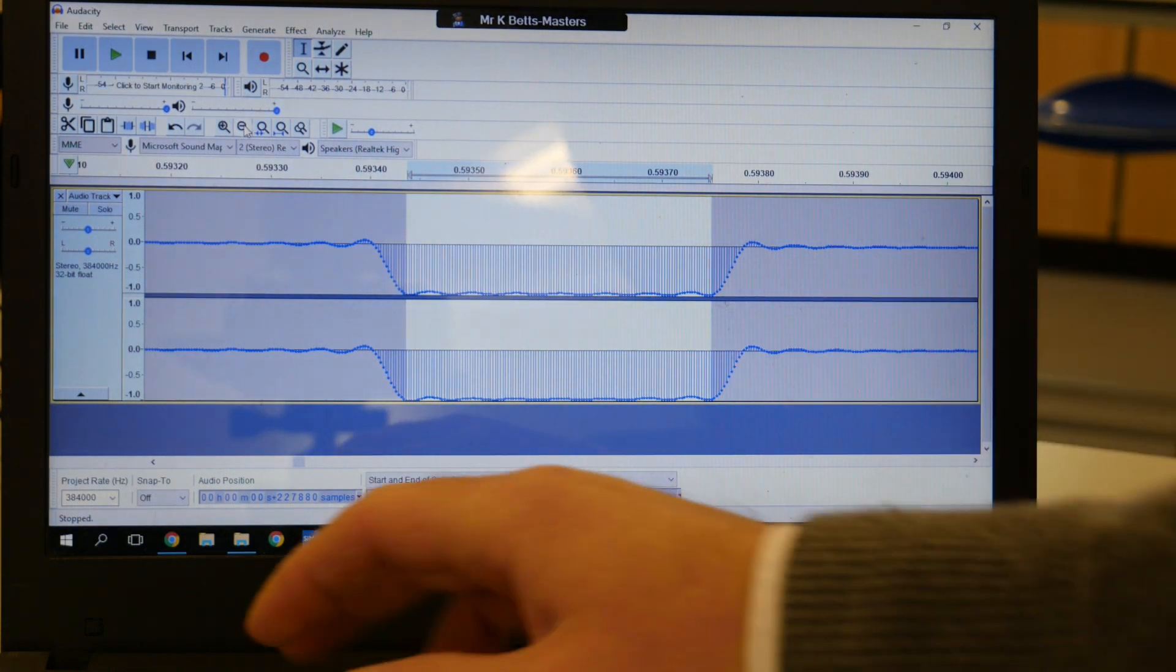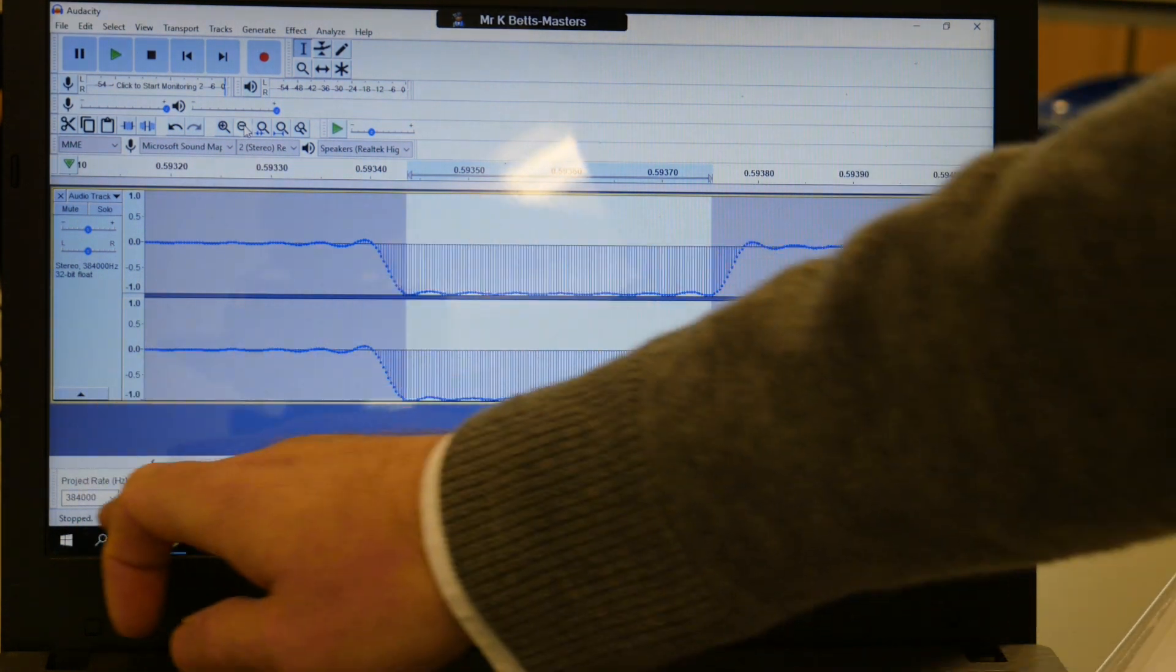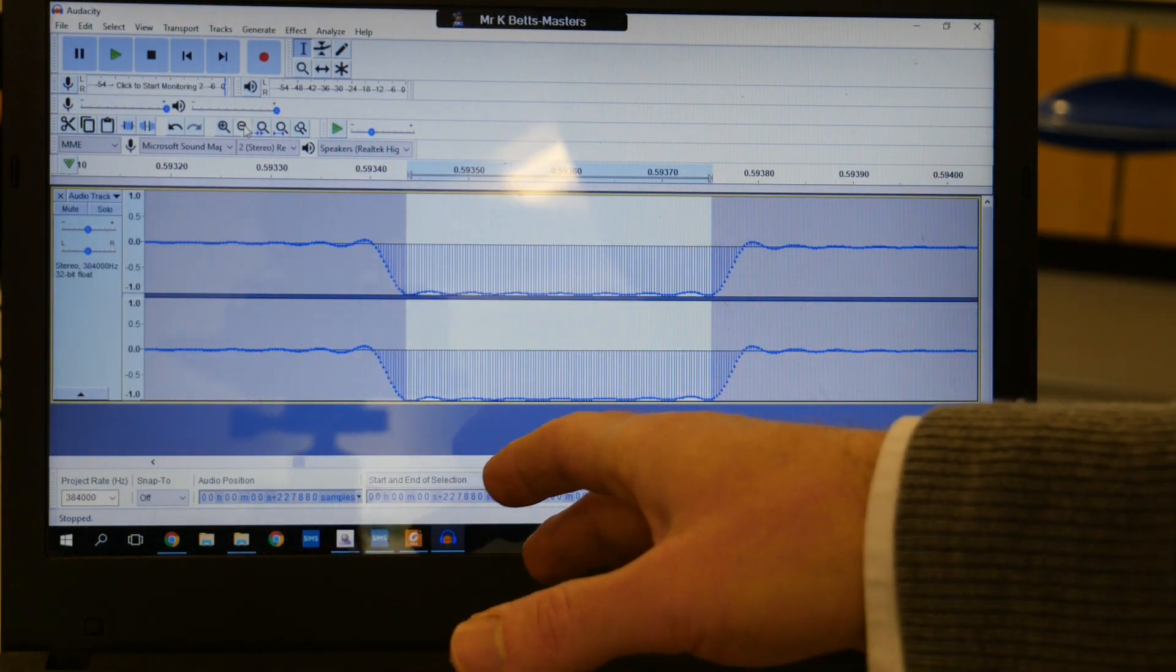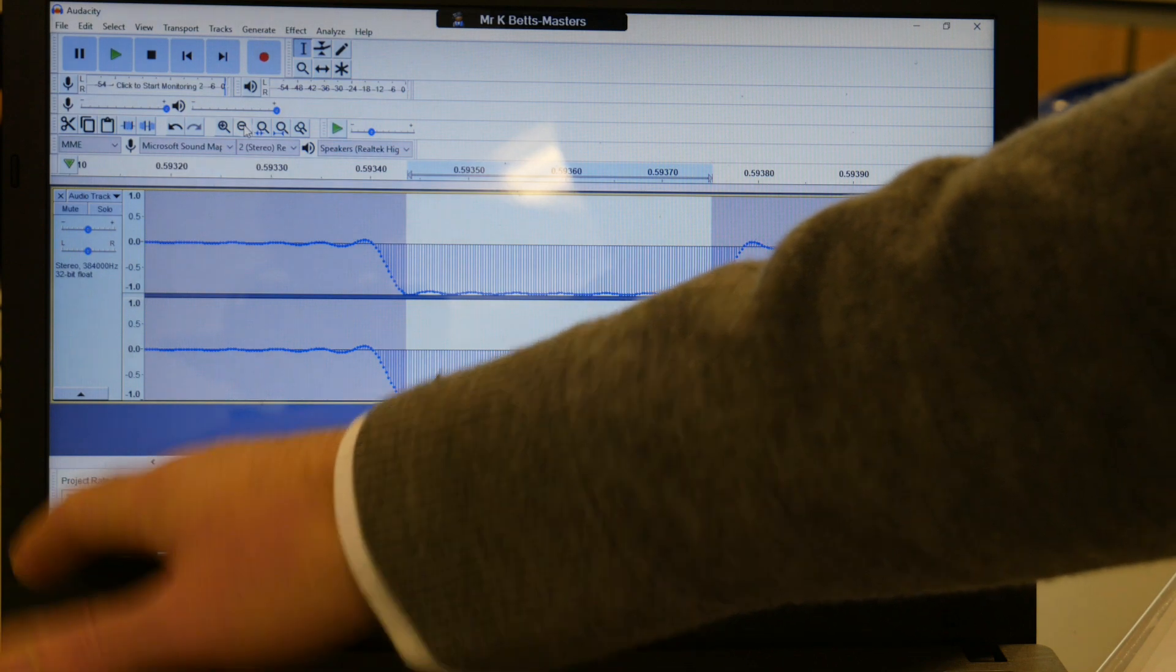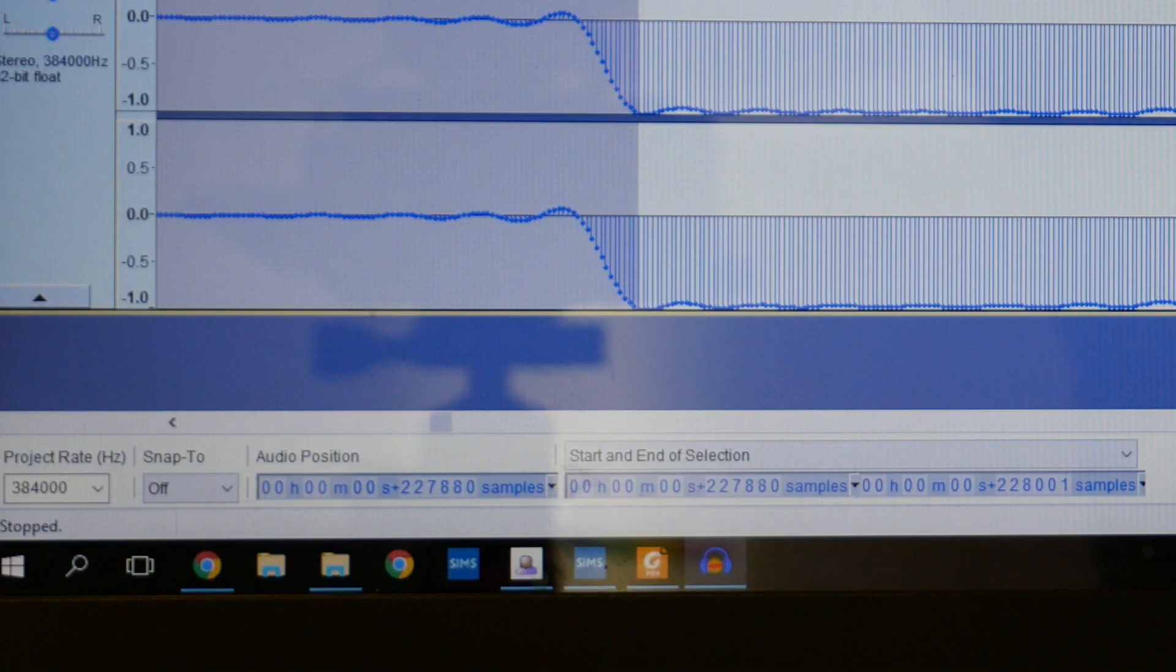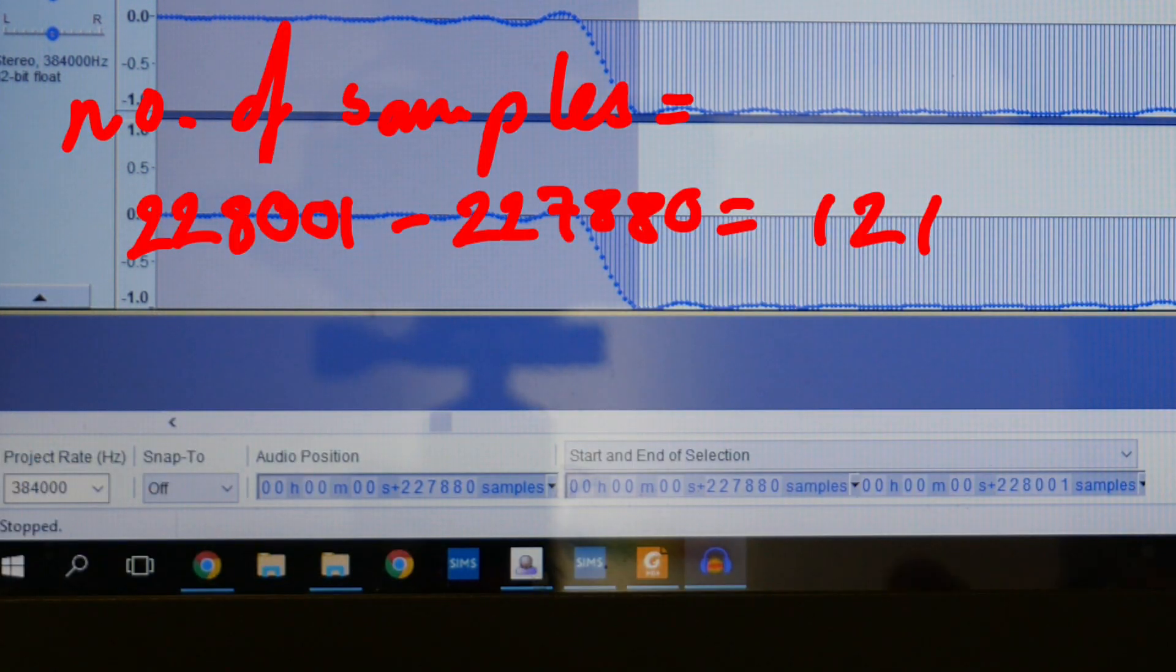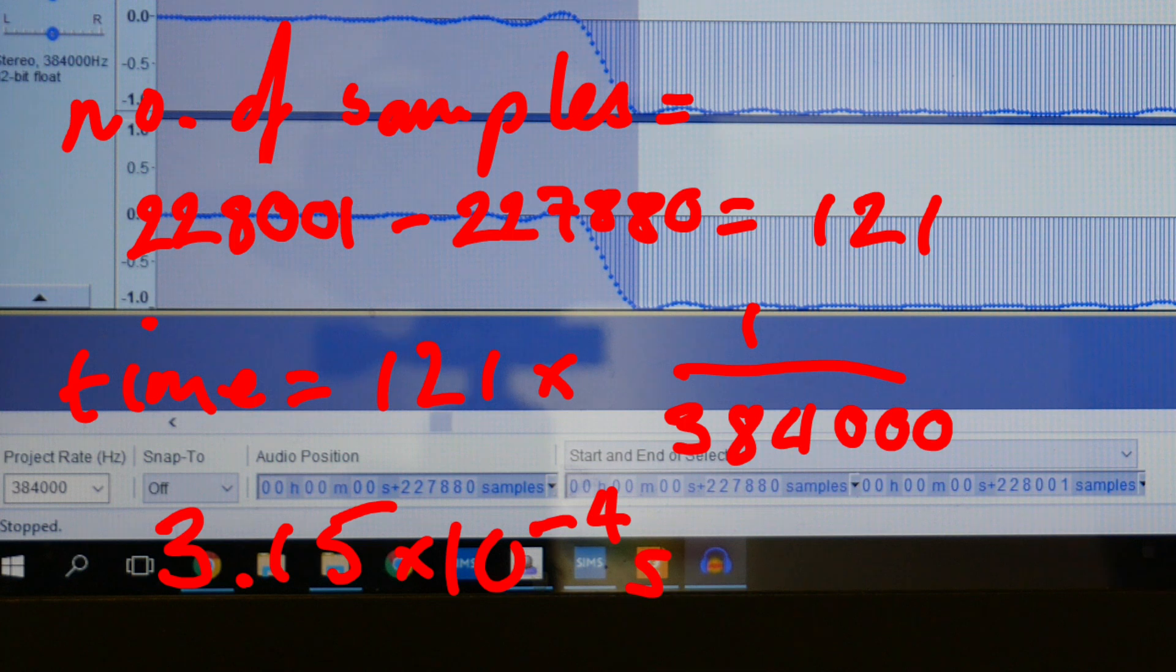So we're using the project rate which is like how many samples per second it does to get a time. So we can just read off the starting sample, the final sample, do the difference between that and multiply it by the time between each sample. The project rate is 384,000 samples per second. So if we just take the number of samples and times it by one over 384,000, that gives us the time that hammer's in contact with the rod.